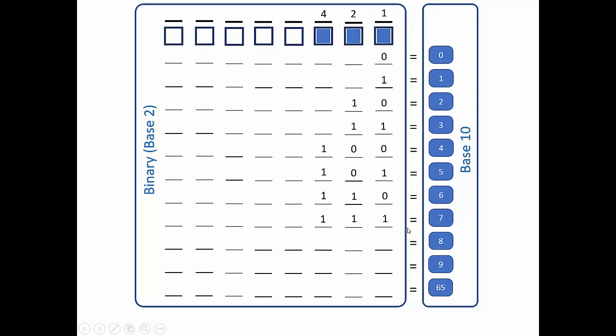For 8: if all three boxes are on, that's the maximum value of 7. I can't represent 8 with those 3 boxes, so I need a new box worth 8. So this box is going to be worth 8 when turned on. To do 8 in binary: the 8 is on, the 4 is off, the 2 is off, and the 1 is off. 1 0 0 0 in binary equals 8.